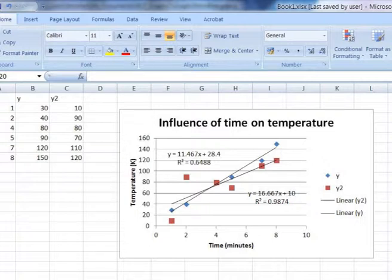Now you can see the R squared for the blue data is much higher than that of the red data points. The blue data points has an R squared of 0.9874, where the red data points has an R squared of 0.6488.